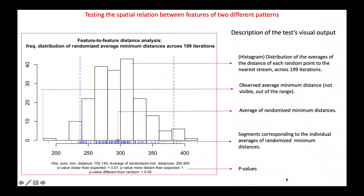The function generates an image displaying the frequency distribution histogram of the randomized average minimum distances. It also shows the average of the randomized minimum distances as well as the observed average minimum distance. Three p-values are reported: one for the hypothesis of sites closer to water streams than expected, one for the hypothesis of sites more distant from water streams than expected, and one for the hypothesis of a pattern different from random.